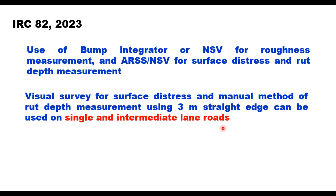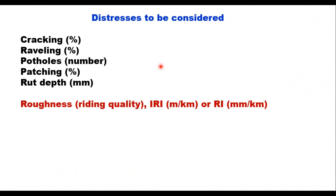Six types of distresses are considered in the evaluation of PCI: cracking, raveling, potholes, patching, and rut depth — these are five surface distresses — along with roughness, which is riding quality expressed either in terms of IRI or road evenness index in millimeters per kilometer or meters per kilometer.